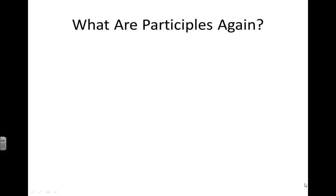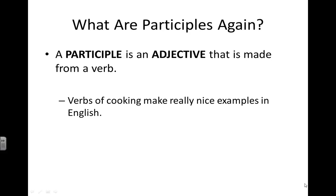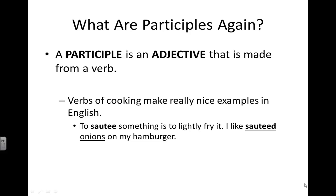So quickly, to review: what are participles? Remember that a participle is an adjective that is made from a verb. If you consider verbs of cooking, they make really nice examples in English of how these past participles work. For example, to sauté something is to lightly fry it. 'I like sautéed onions on my hamburger.' The words in bold indicate the connection of the verb in the first sentence to the adjective in the second sentence.